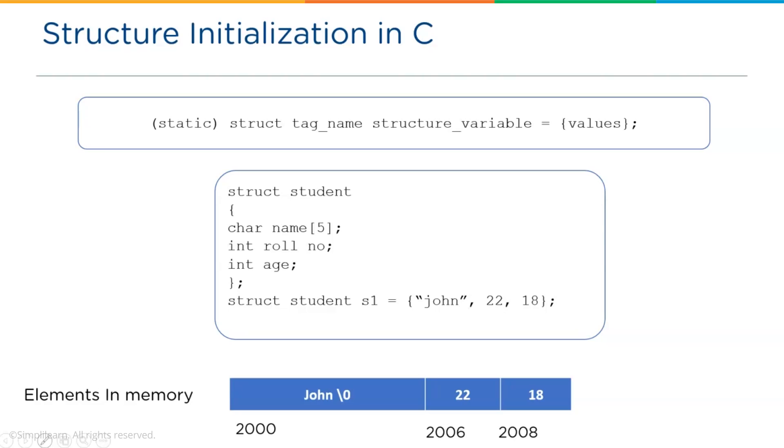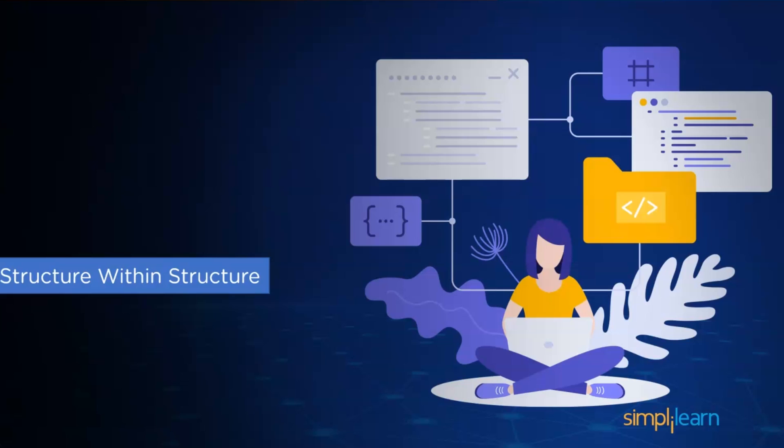For the s1 variable, the total memory allocated is 8 bytes. That is, 5 bytes for s1.name, 2 bytes for s1.roll number and 2 bytes for s1.age. So, I think you got a good understanding of how memory is allocated for the structure elements.